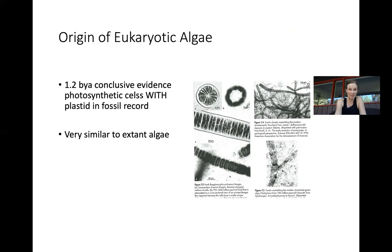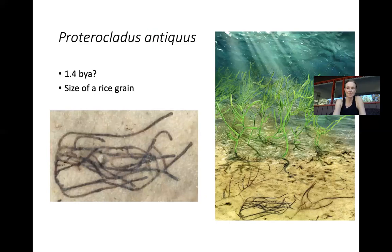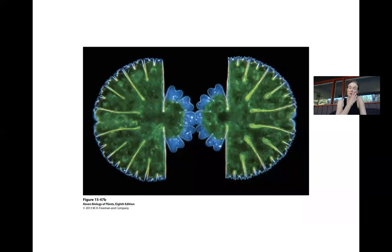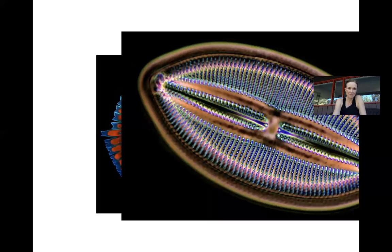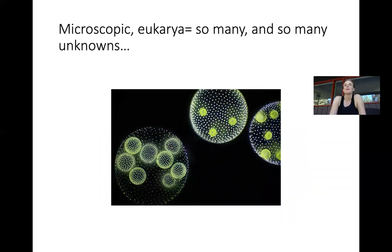More recently, a group in Canada found perhaps the oldest fossil of eukaryotic cells — again an algal-like organism, size of a grain of rice, very tiny. We're going to read this paper because it's really cool. The point is eukaryotes are pretty old — about one and a half billion years old from fossil evidence. But they're beautiful: little single-celled eukaryotes like desmids are spectacular. There are so many unknowns about what they do in our ecosystems.